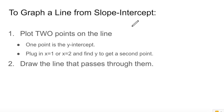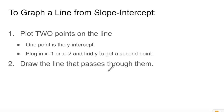Now let's graph a line from the slope-intercept form. The process is this: we're going to plot two points on the line. One point is the y-intercept — that's the freebie. We always know that (0, b) is one point on the line. Then we plug in x equals 1 or x equals 2 to find a second point, and then draw a line through those two points — basically connect the dots.